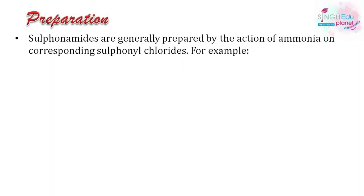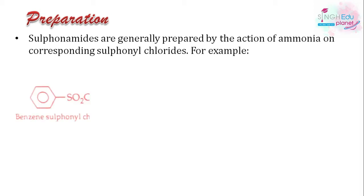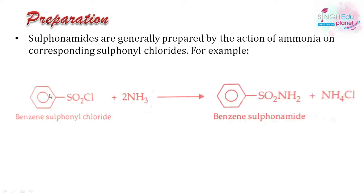Sulfonamides are generally prepared by the action of ammonia on the corresponding sulfonyl chloride. In the last video we saw how sulfonyl chlorides are prepared. Here, benzene sulfonyl chloride reacts with ammonia to give benzene sulfonamide and ammonium chloride as a byproduct.